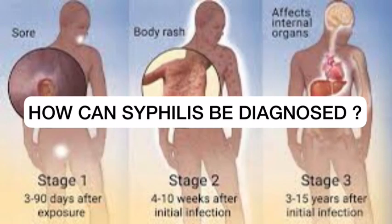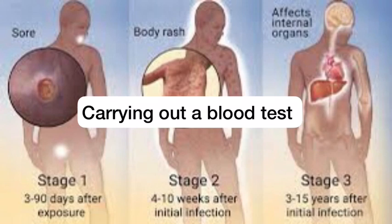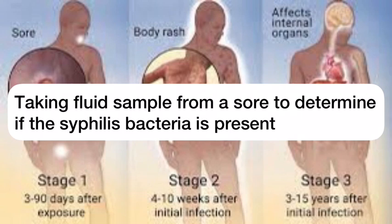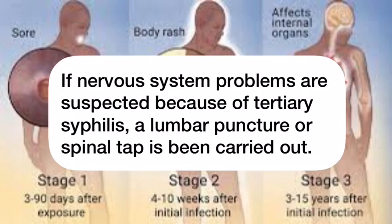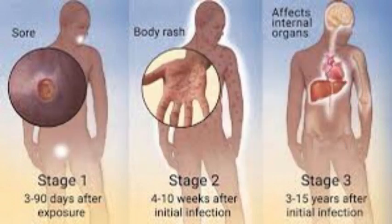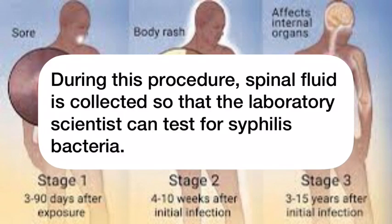So how can syphilis be diagnosed? Firstly, syphilis can be diagnosed by carrying out a blood test. It can also be diagnosed by taking fluid samples from a sore to determine if the syphilis bacteria is present. If nervous system problems are suspected because of tertiary syphilis, a lumbar puncture or spinal tap is carried out, during which spinal fluid is collected so that laboratory scientists can test for syphilis bacteria.